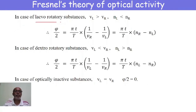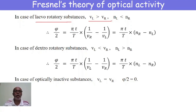In a levorotatory substance, v_L > v_R — the velocity of the left-handed ray is greater than that of the right-handed ray, meaning the anti-clockwise wave travels faster than the clockwise wave, and the refractive index for anti-clockwise is less than for clockwise. Therefore φ/2 = (πt/T)(1/v_R − 1/v_L), which can be rewritten as (πt/T)(n_R − n_L).